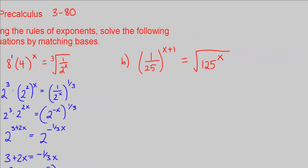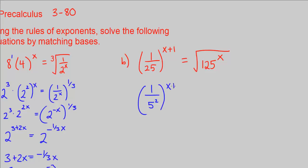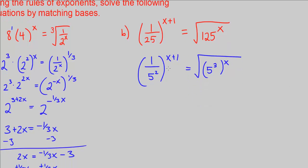Part B. The common base I see here is 5: 25 is 5 squared, and 125 is 5 cubed. So let's rewrite these with a common base. This is going to be 1 over 5 squared to the power of x plus 1, equal to the square root of 5 cubed to the power of x. I'm just changing the numbers to equivalent representations. Now I'll use the rules of exponents to simplify the left side.